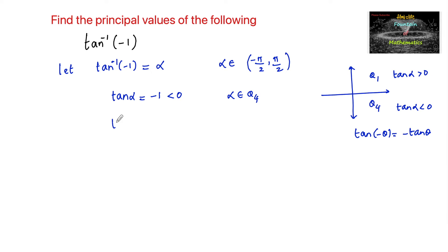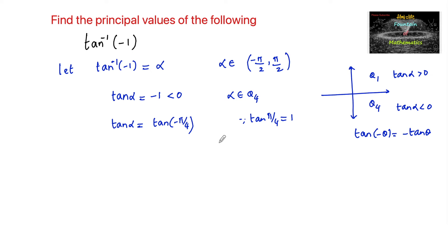So we can write tan alpha is equal to tan of minus pi by 4, since tan pi by 4 is equal to 1, so tan of negative pi by 4 is negative 1. Therefore alpha is equal to minus pi by 4, which belongs to the fourth quadrant and also belongs to the principal range minus pi by 2 to plus pi by 2.